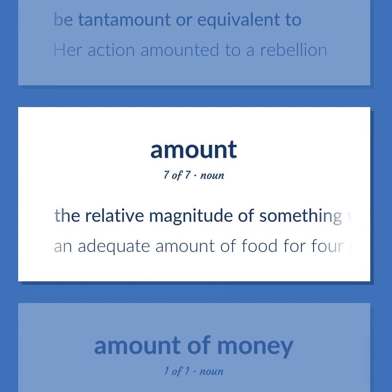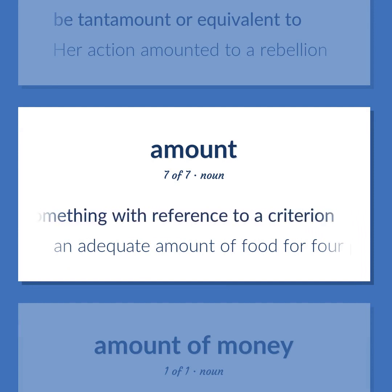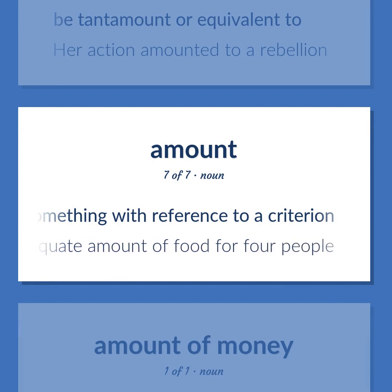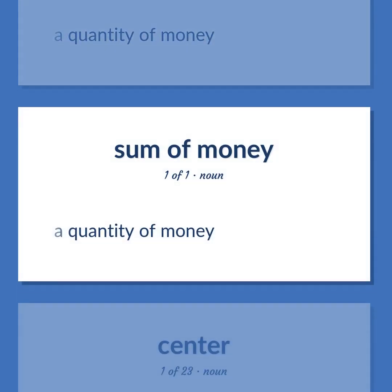Amount (continued): The relative magnitude of something with reference to a criterion — an adequate amount of food for four people. A quantity of money.